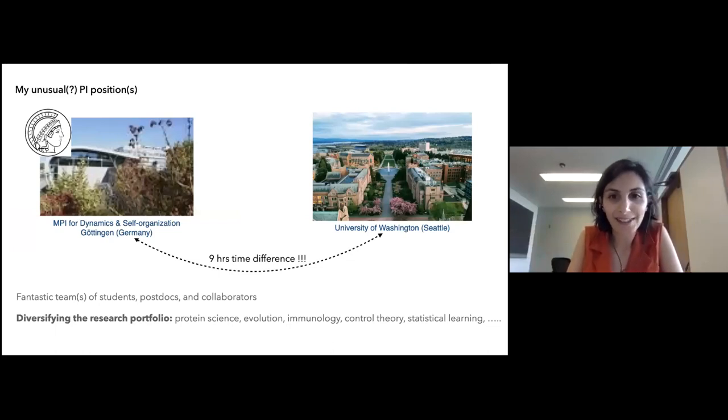After postdoc I got into a usual PI position. I accepted two jobs at the same time with nine hours time difference—one at the University of Washington in Seattle and the other one as Max Planck Research Group Leader in Germany. It ended up being a very fulfilling opportunity and I'm working with fantastic teams of students, postdocs, and collaborators in both Europe and the US. I managed to also diversify our research portfolio—working on protein science evolution, immunology, bringing ideas from statistical learning and control theory to various fields.